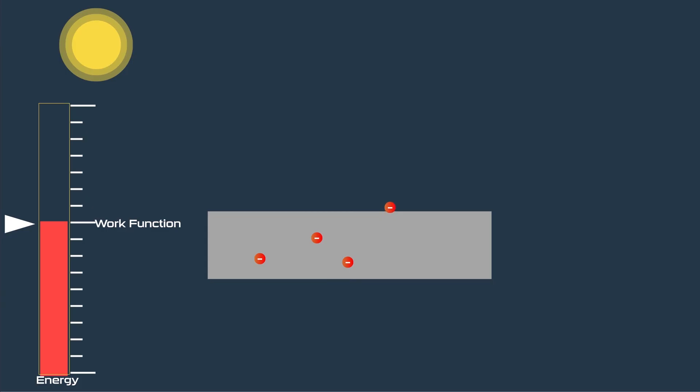But if the frequency of photon is more than threshold value, then electrons will not only eject from the surface, but also move with the kinetic energy.